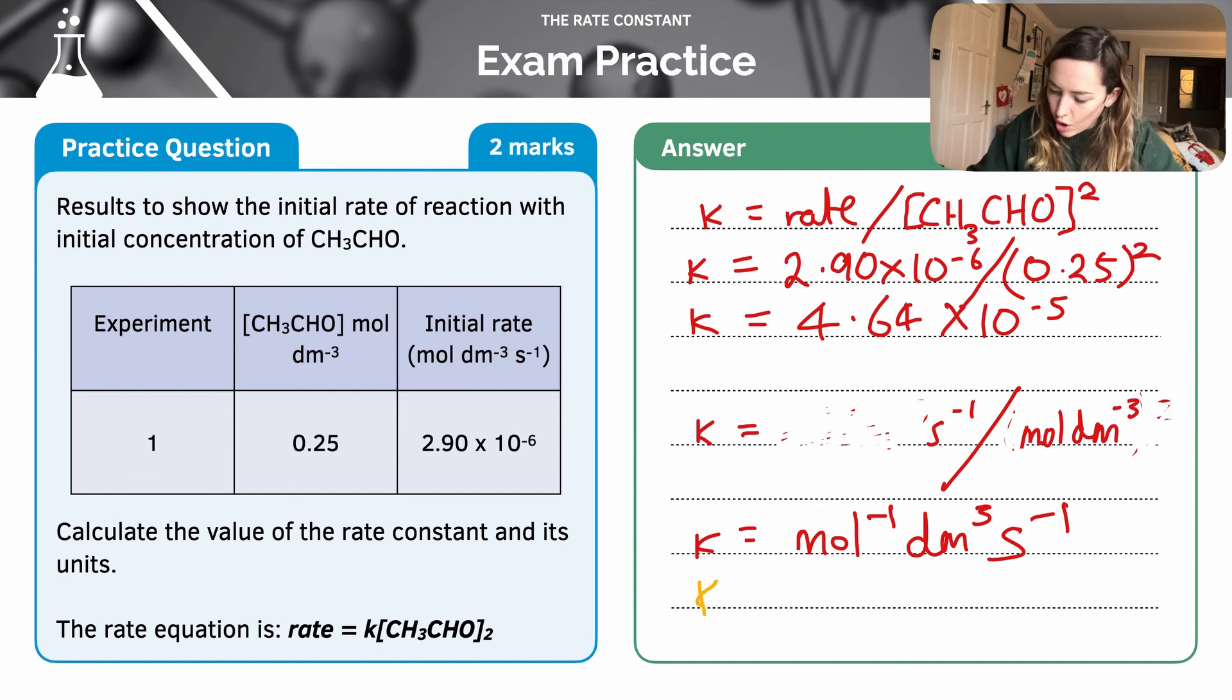Let's just write that overall, so put it all together, don't forget to do that. 4.64 times 10 to the minus 5 moles to the minus 1 decimetre cubed per second.